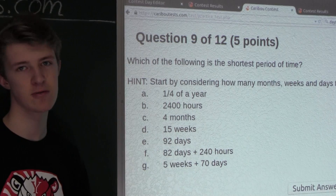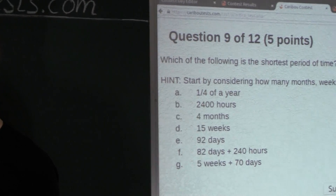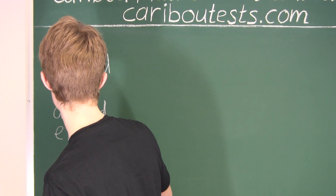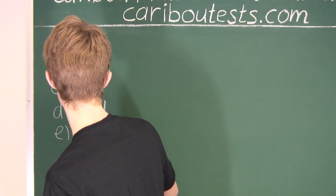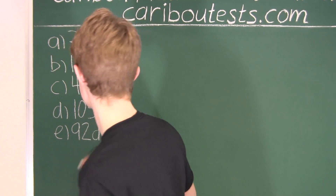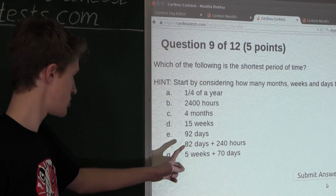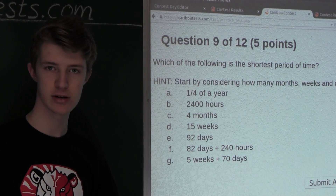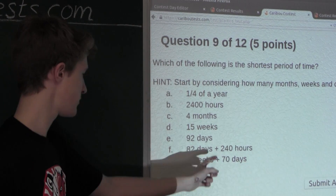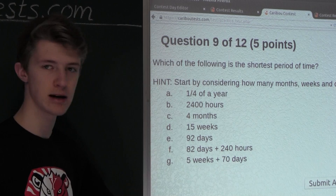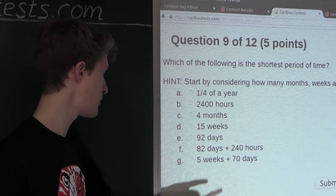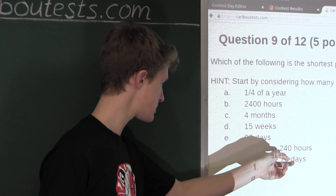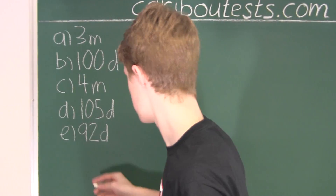Option E: 92 days — we will just leave that as 92 days. Option F: 82 days plus 240 hours. Dividing the hours by 24 to get the number of days, 240 divided by 24 is 10. So 82 plus 10 is 92 days again.